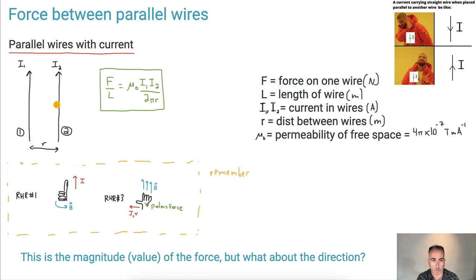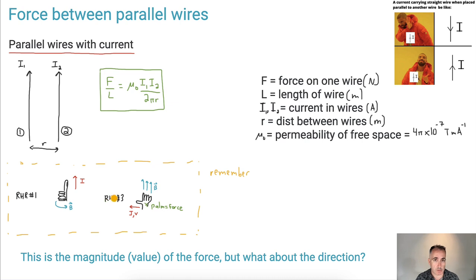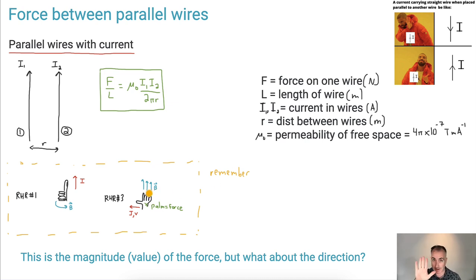If you have a wire with a current in it, you can use right-hand rule number one. Point your thumb in the direction of the current, and your fingers will curl in the direction of the magnetic field B. We're also going to use right-hand rule number three: your fingertips point in the direction of the magnetic field lines, your thumb gives the direction of the current, and your palm points in the direction of the force.